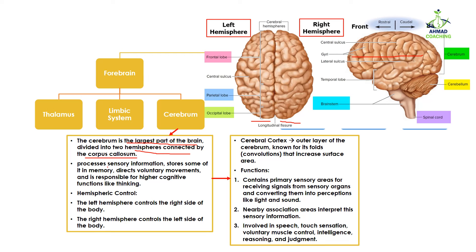The cerebrum processes sensory information and stores short-term memories. It directs voluntary movements — like grabbing something or reading a book — and is responsible for higher cognitive functions like thinking. The cerebrum also has hemispheric control: the left hemisphere controls the right side of the body, while the right hemisphere controls the left side of the body.